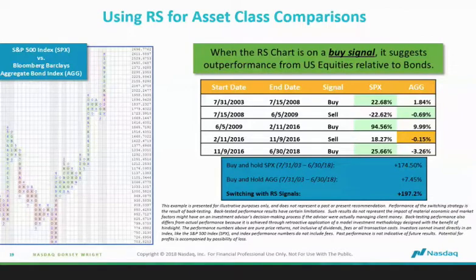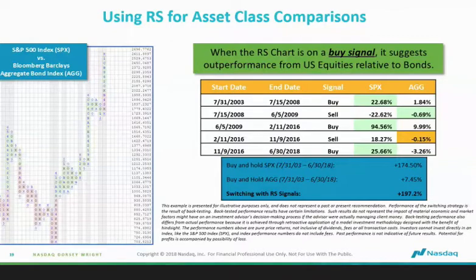Notice the sell signal that takes place July 15, 2008. For those of you who remember 2008 — a tough year — having the ability to move 30% of the portfolio into bonds, the Aggregate Bond Index, was extremely important. The S&P during that period was down 22%; the SPX combined with the AGG was down only 0.69%, keeping your money relatively stable. Then on June 5, 2009, the market had bottomed and you went back to 100% invested in the underlying U.S. equities in this tactical fund.